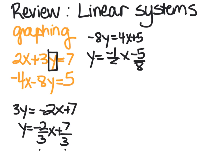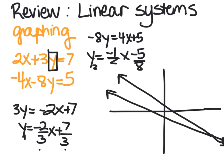and then minus 5 eighths. So you could put that in y2 and that in y1, or graph them both by hand, and they would look like this. To find the intersection in your calculator, you would hit 2nd, calc, intersect, and it would give you an ordered pair of, in this case, 17.75 comma negative 9.5.